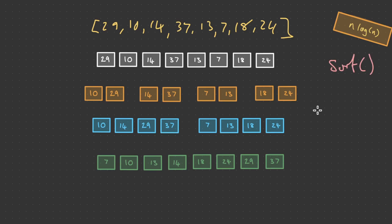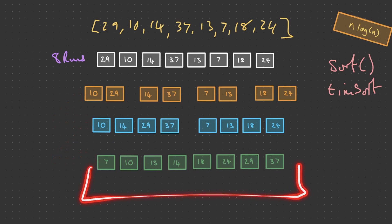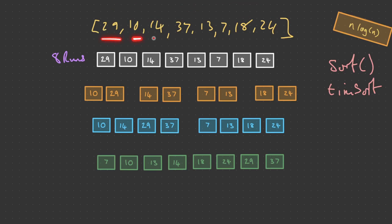In JavaScript, the sort method uses a variation of Tim sort, which uses the divide and conquer approach similar to merge sort. Tim sort first uses insertion sort to create runs — for simplicity, let's say we break the array down into eight individual runs. Now that we've divided it into eight runs, we start merging: 29 and 10 are merged and sorted, 14 and 37 are placed in order, 13 and 7 are sorted and merged, and 18 and 24 are already in order. We repeat this process — sort and merge — until the entire array is sorted.